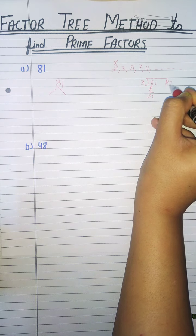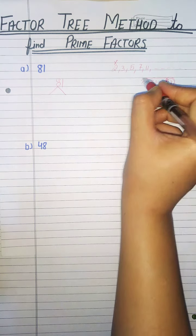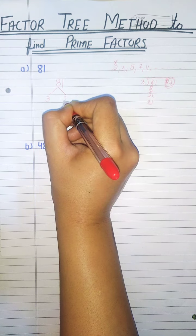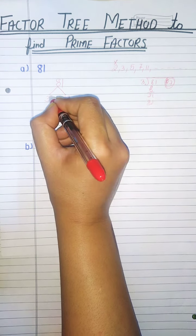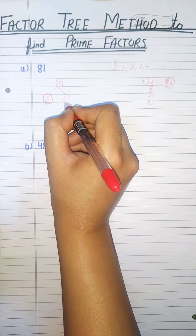And we get 27 as quotient, so 3 times 27 is 81, and 3 is a prime number.